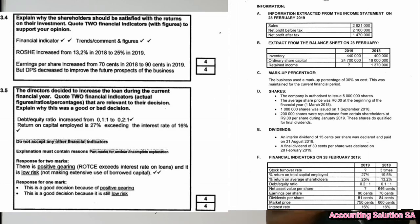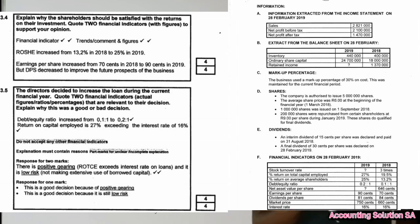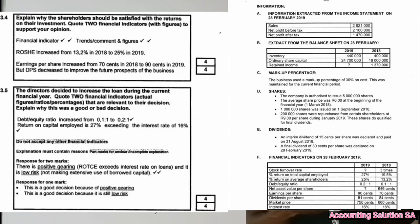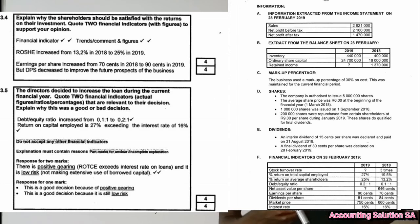For question 3.5, directors decided to increase the loan during the current financial year — quote two financial indicators to support this. Number one: the debt-to-equity ratio has increased, meaning liabilities have increased. Number two: return on capital employed has increased — it went from 19.5 percent to 27 percent. The memorandum notes that return on capital employed of 27 percent exceeds the interest rate, which was 16 percent.